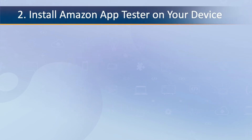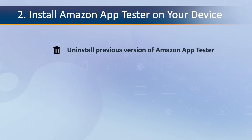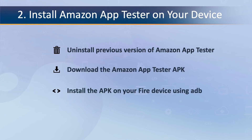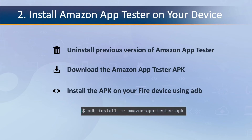The second step is to install the Amazon App Tester on your device. First, uninstall any previous version of Amazon App Tester. Next, download the Amazon App Tester. Then, in your terminal or command prompt, browse to the directory where you downloaded the Amazon App Tester APK and install the APK on your Fire device using ADB with the command: adb install -r amazon-app-tester.apk. The -r parameter reinstalls the APK in case you already have App Tester installed.